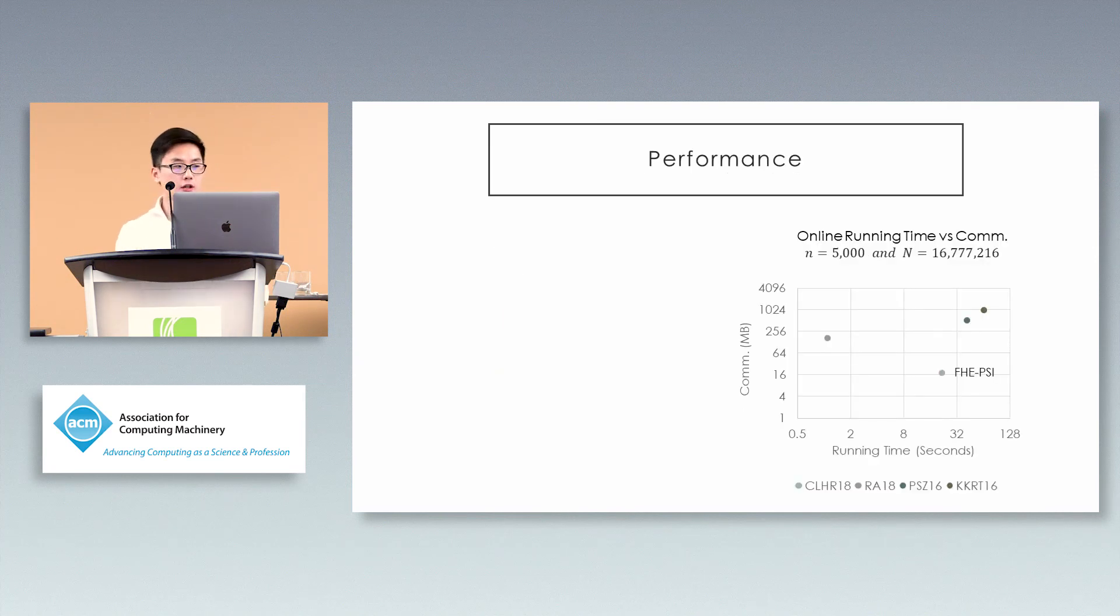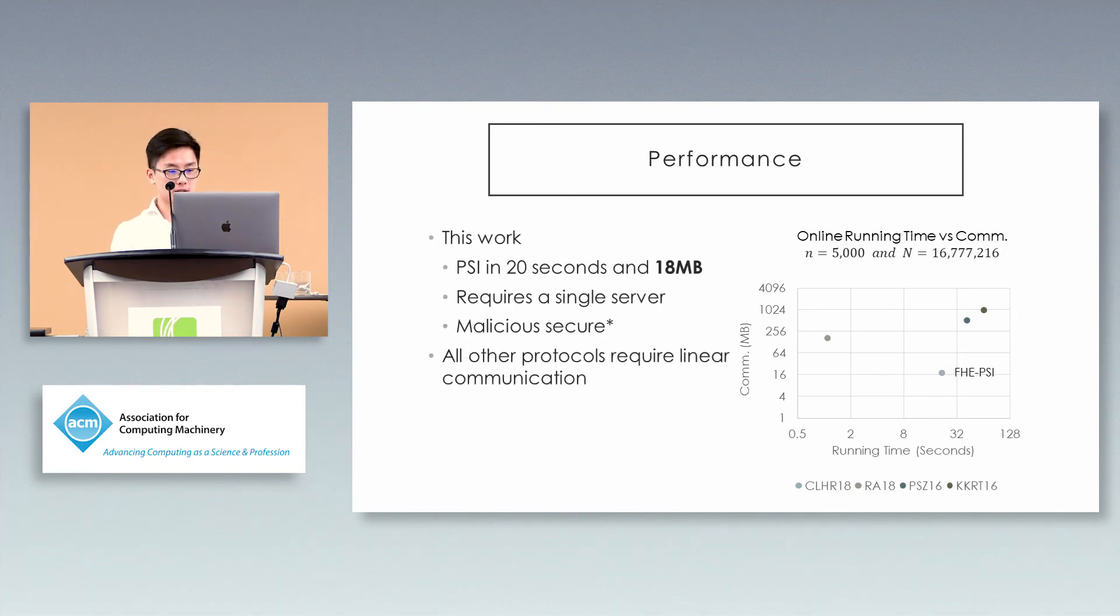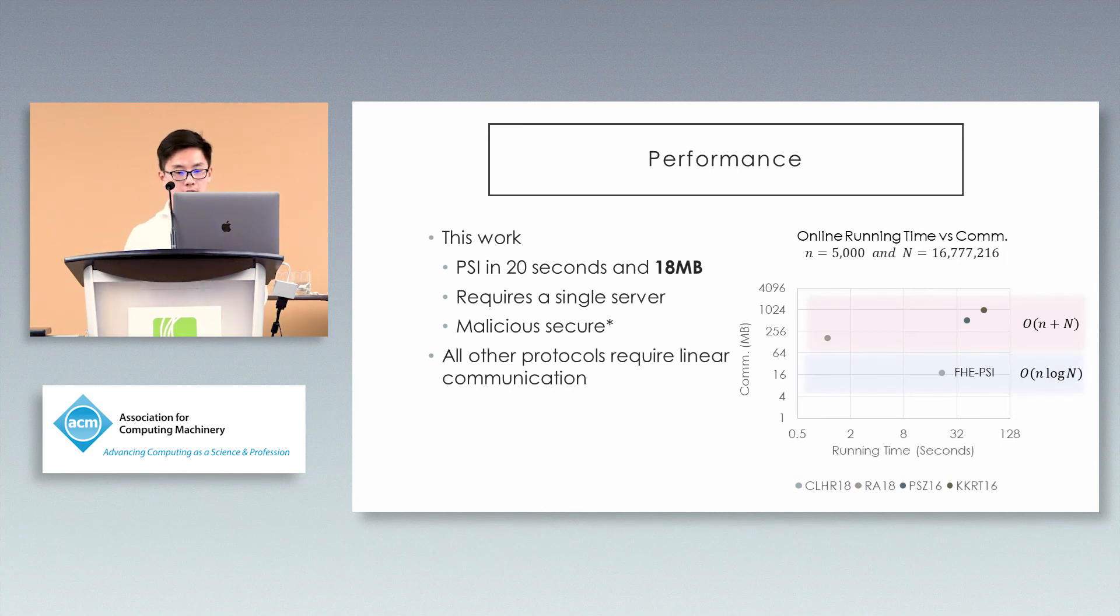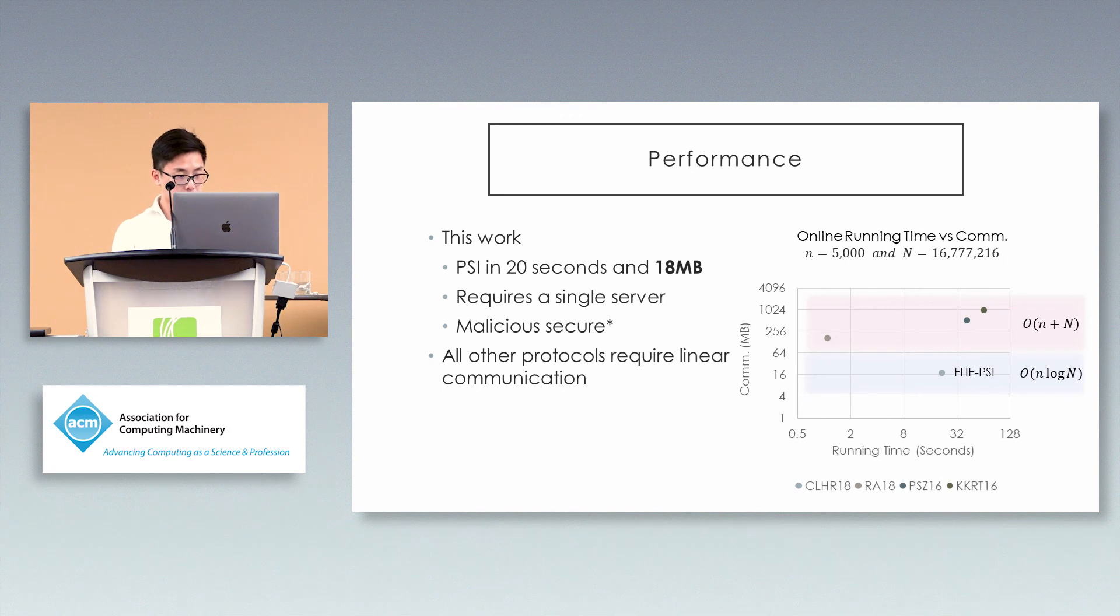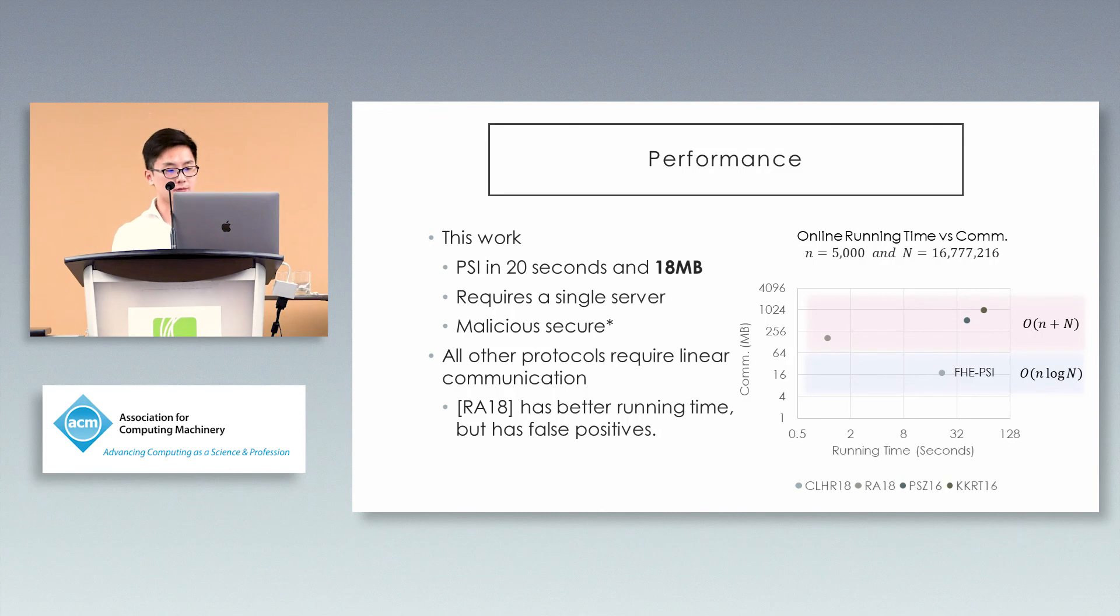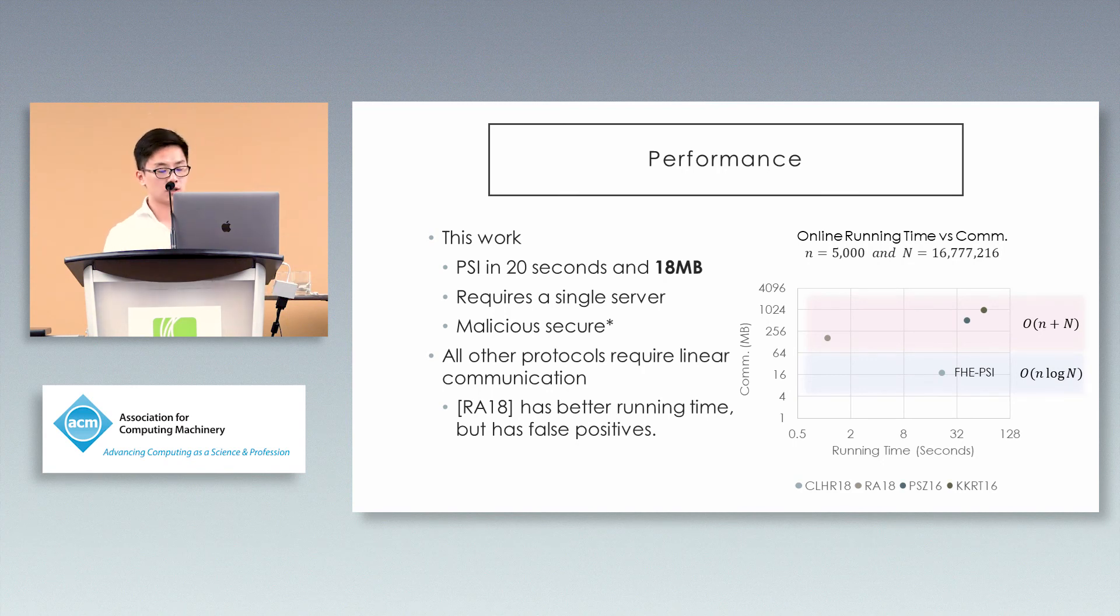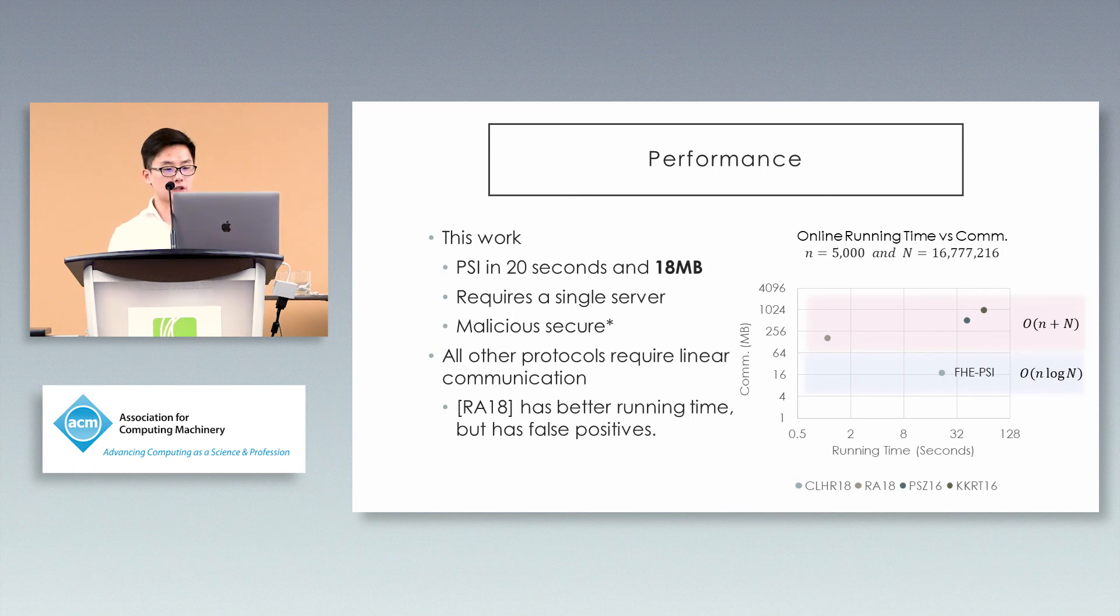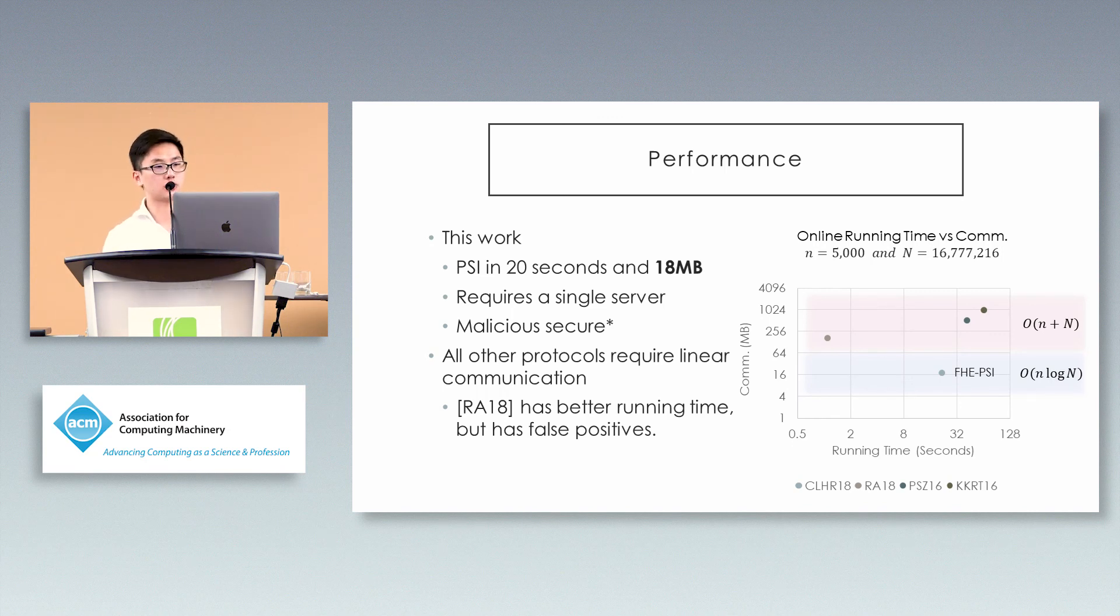Here's the slide about performance. We chose to use 5,000 items for the receiver and 60 million items for the sender. You can see that for our protocol, it achieves very small communication because it's only logarithmic in the larger set, and its running time is good. Other protocols require linear communication. Notably, our protocol only requires a single server and one round. There is a point on the left with better running time. This is work from earlier this year which allows the server to send a cuckoo filter to the receiver and achieves good running time. But it has some probability of false positives. There's a tradeoff between speed and correctness.